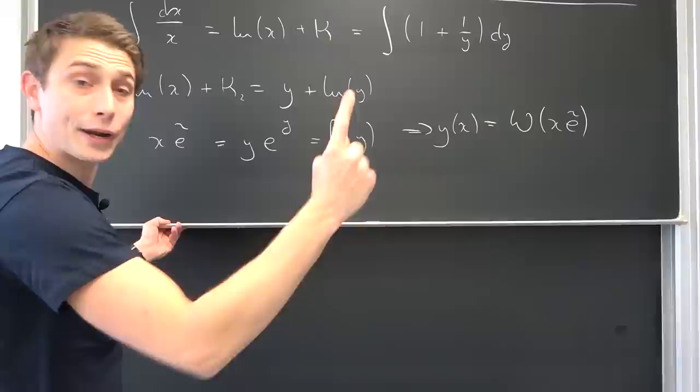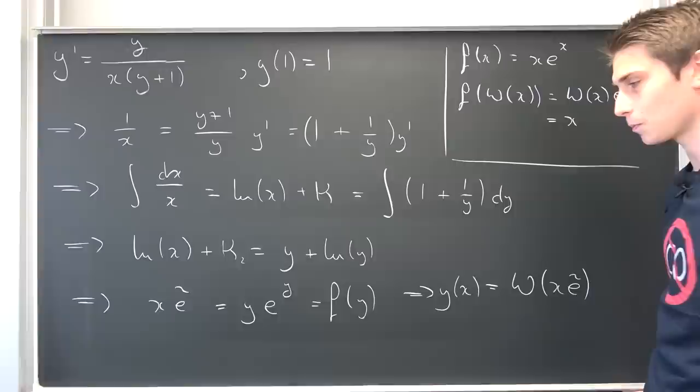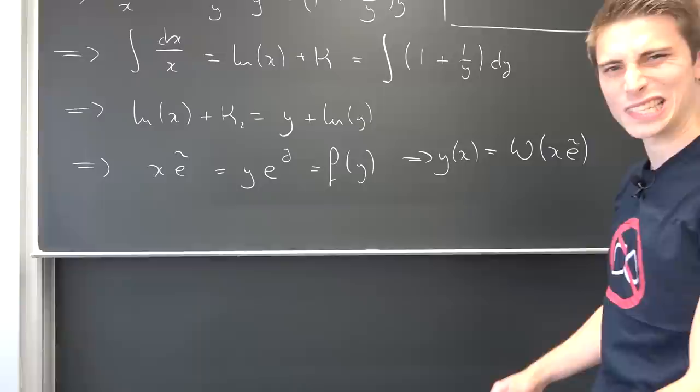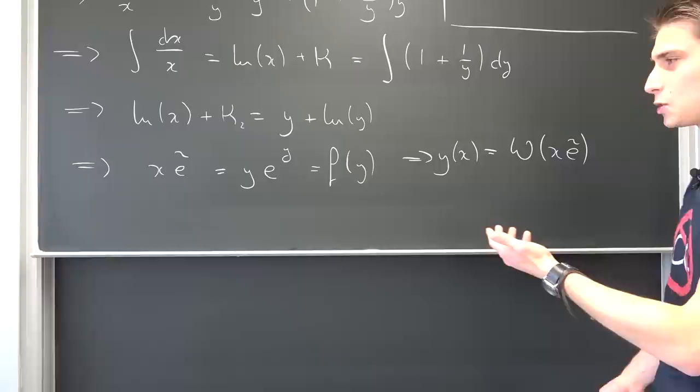An initial value problem. This thing right here is actually an initial value problem. Y of 1 is equal to 1. If we plug 1 into here, we are going to end up with Lambert W of c snack being equal to 1. What? How can you solve something like this?